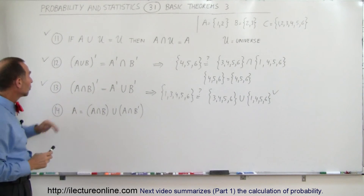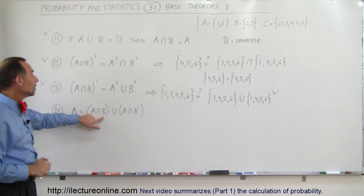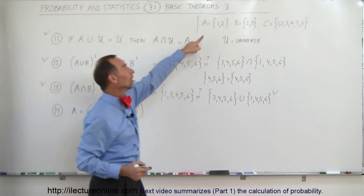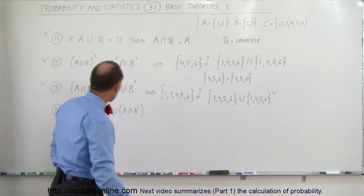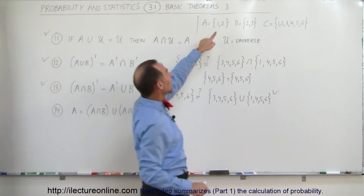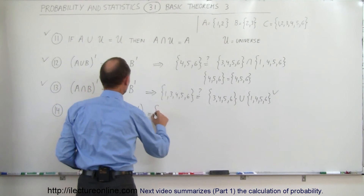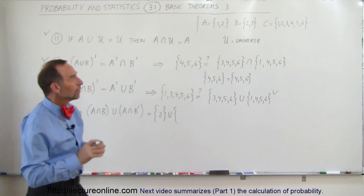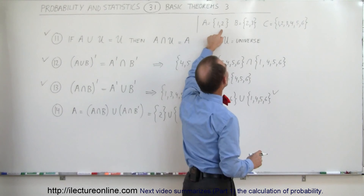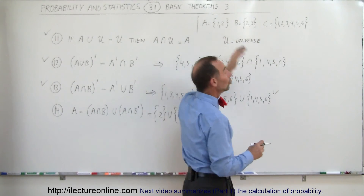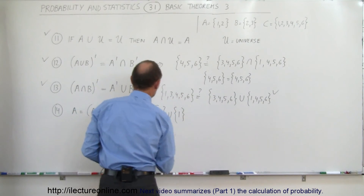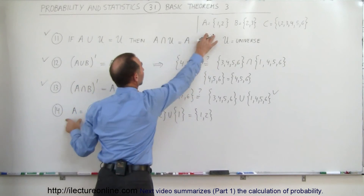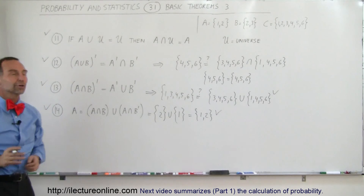Finally, the next theorem: A should equal (A intersection B) union (A intersection not-B). That's kind of amazing if true. A equals one and two. A intersection B gives outcome two. A intersection not-B: not-B is one, four, five, six; A is one and two; the common outcome is one. So we have two union one, which equals one and two — and indeed that equals A. Therefore it works, and that theorem is also a good theorem.